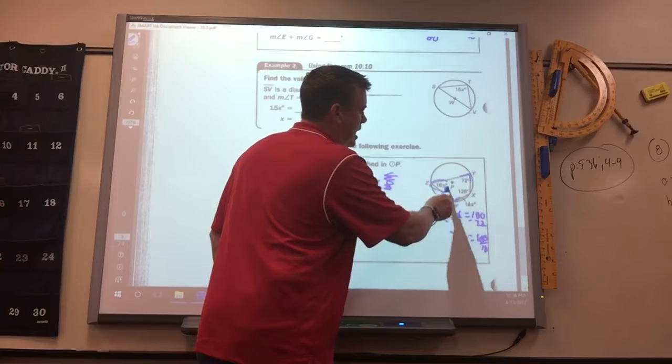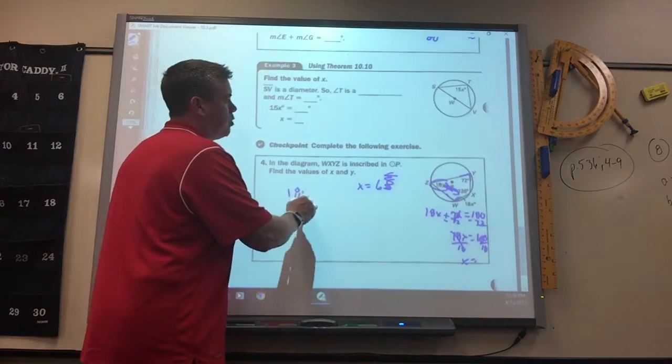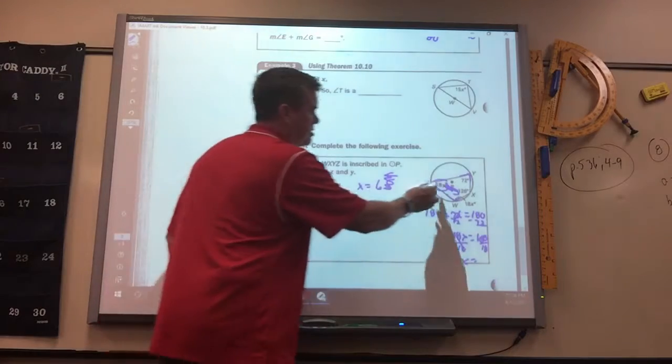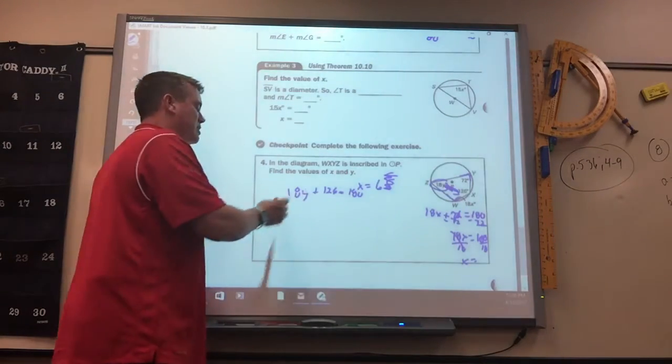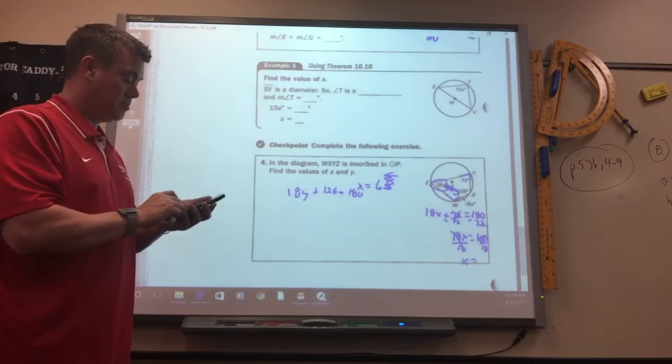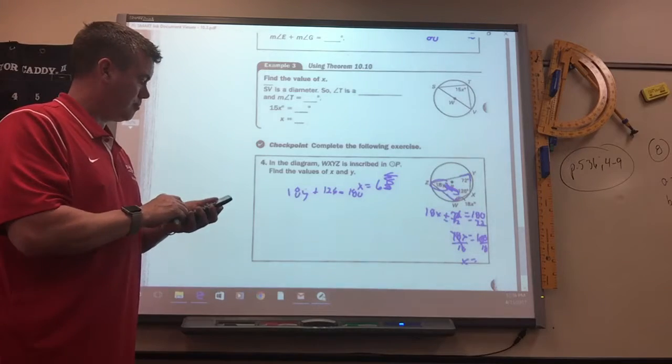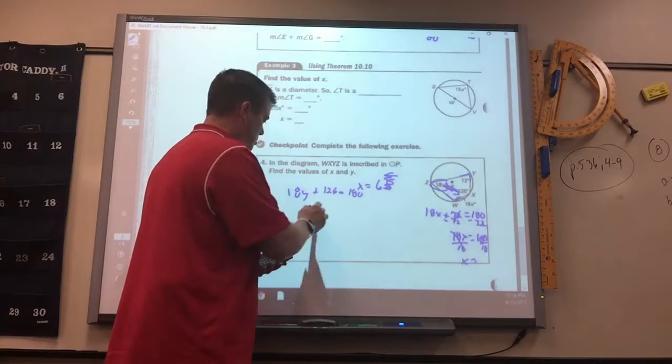And then to figure out Y, these two got to add up to 180. So 18Y plus 126, this plus this, has to equal 180. So you subtract 126 and divide by 18. And you get 3.